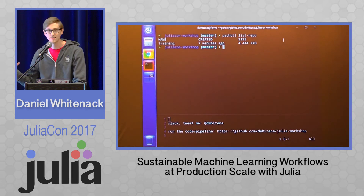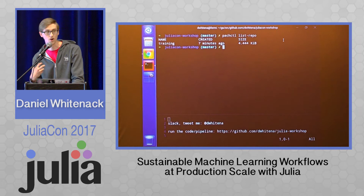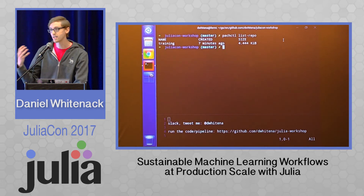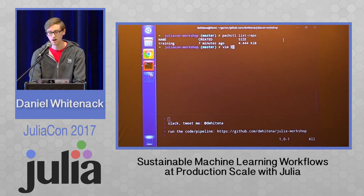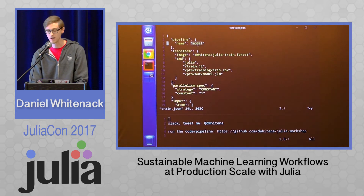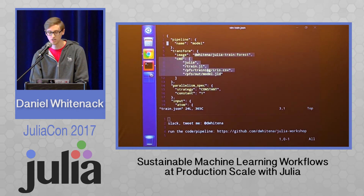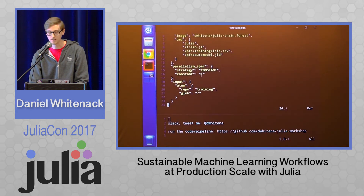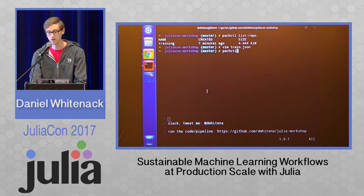To utilize that Julia program that we had on our local machine to process this data that's now on the cluster, we can just create a JSON specification that tells Pachyderm to create a processing stage called 'model'. That processing stage is going to execute my Julia program in that Docker image and process that training data. So we can go ahead and create that pipeline with that specification.